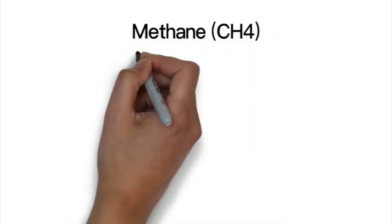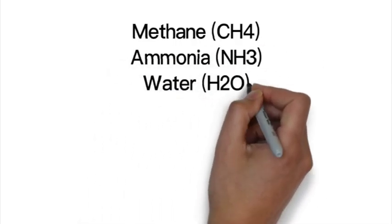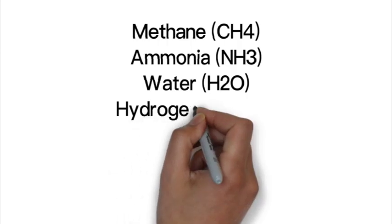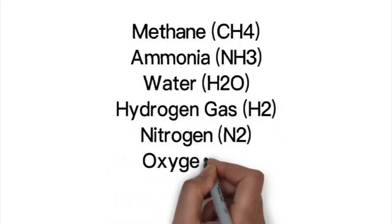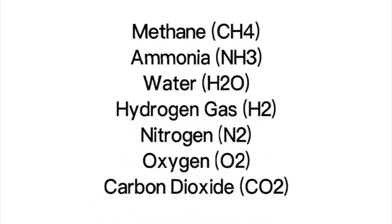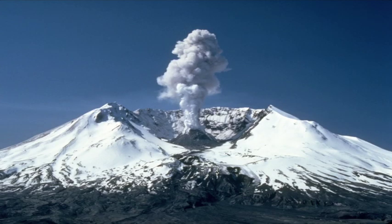Before we move on, let's go over a few of the most abundant and important molecules on this planet: methane (the most common molecule in natural gas - one carbon and four hydrogens bonded together), ammonia, water (oxygen bonded to two hydrogens), hydrogen gas, nitrogen, oxygen, and carbon dioxide.